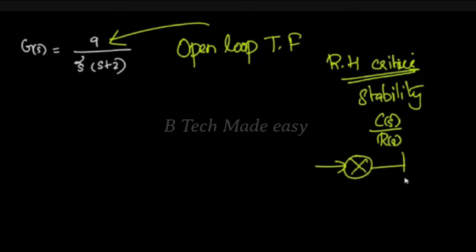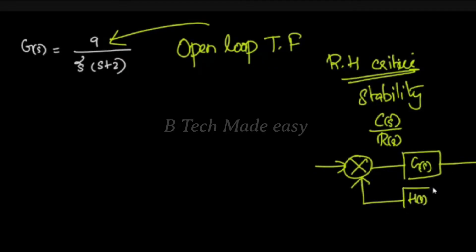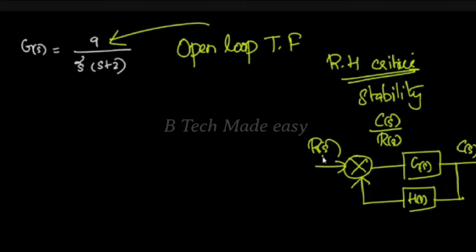It will be a G(s) with feedback H(s). This is our input R(s) and output C(s). It will be plus and minus. Then we will derive C(s) by R(s), the closed loop transfer function equation.